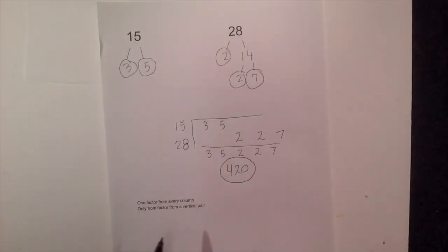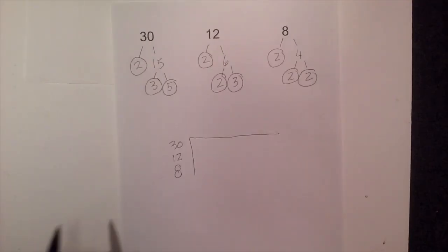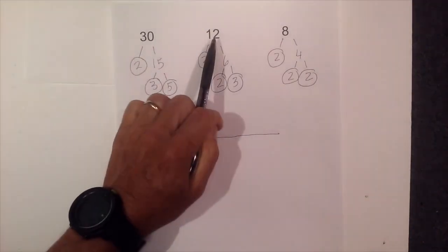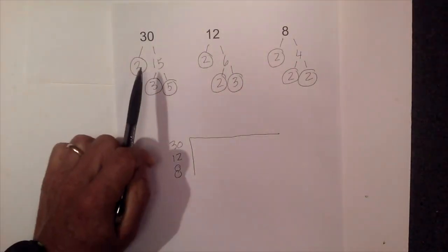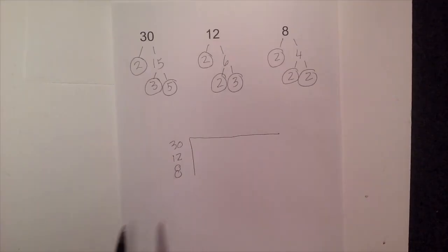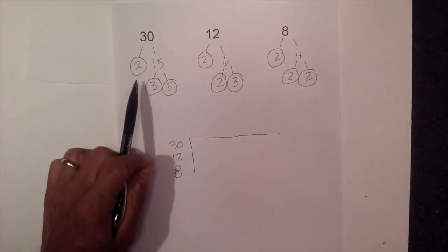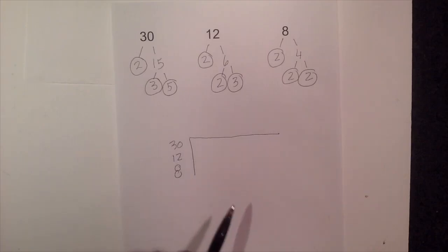And you can see using this technique it is fairly easy. The next one I am going to work actually has 3 numbers and you can apply all the same techniques and rules. So here we go. We are going to find the LCM of 30, 12, and 8. And again I went ahead and completed the factor tree. So, and I circled all the prime numbers. Now I am going to create my prime factorization chart.